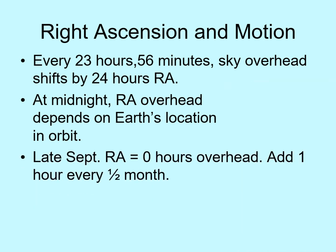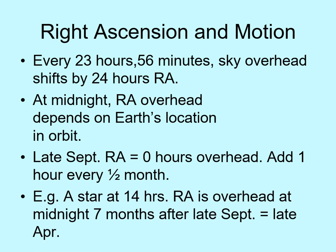Zero hours right ascension is overhead at midnight in late September. Since there are 24 hours of right ascension to go through in a year, we gain one hour of right ascension each half of a month. For example, a star at 14 hours right ascension is overhead at midnight seven months after late September, meaning it's overhead at midnight in late April. Remember that these dates refer to the view at midnight. If you want to know about other times, the RA overhead will be different by the number of hours before or after midnight.